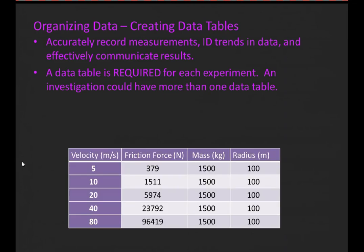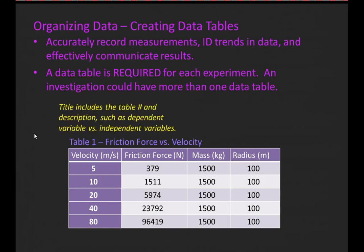Here's an example of a data table for the example we're using between velocity and friction force. Let's look at some key functions of this table. First of all, the table is set up in columns, which go vertically, and rows, which go horizontally. A table needs a title, and the title includes the table number. The first table in every report is Table 1, the second table is Table 2, and so on. It also needs a descriptive title.